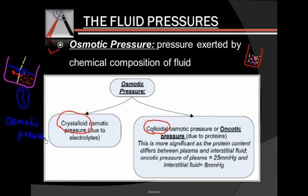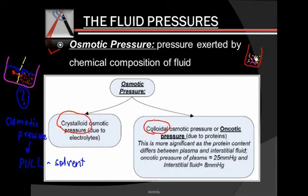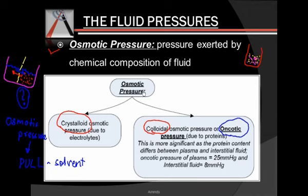The key property of osmotic pressure is that it has the capacity to pull the solvent in. Now, inside the body, the main fluid we talk about is blood. Blood has solutes including sodium, magnesium, chloride, and proteins. The electrolytes — sodium, chloride, etc. — exert crystalloid osmotic pressure, while proteins exert colloidal osmotic pressure, also called oncotic pressure. An important point: proteins exert a very high osmotic pressure, whereas crystalloids have negligible osmotic pressure.